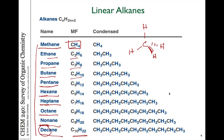All these alkanes drawn in condensed formulas have the general molecular formula CnH2n+2. That is, for every carbon atom the number of hydrogens is twice that plus two. So for C4, it's two times four, which is eight plus two, equals ten hydrogens.